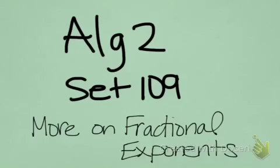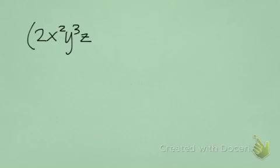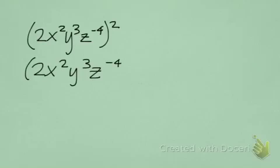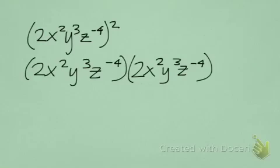Algebra 2, set 109: more on fractional exponents. 2x squared y cubed z to the negative 4th, raised to the second power, is the same as saying 2x squared y cubed z to the negative 4th times 2x squared y cubed z to the negative 4th.